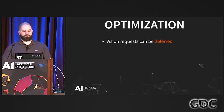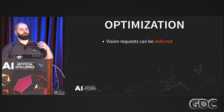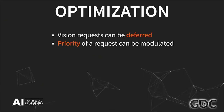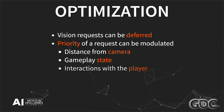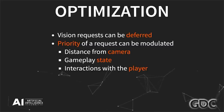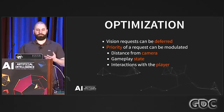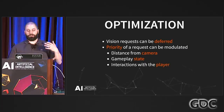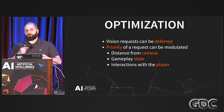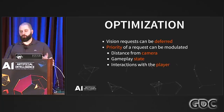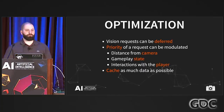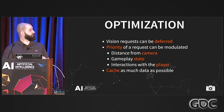Some quick tips for optimization: vision requests can be deferred. If you can make your NPC put a request in a system, tweak the priority based on distance from camera, gameplay state, or interaction with players — for example, an NPC actively interacting with the player might require a very high priority — then you can sort your raycast requests, treat them accordingly, and cache as much data as possible. If you have multiple NPCs testing the same position, reuse that information.